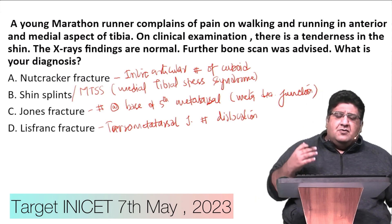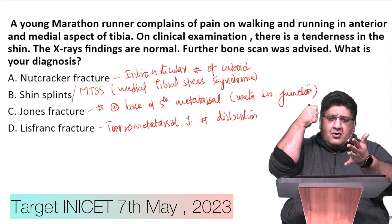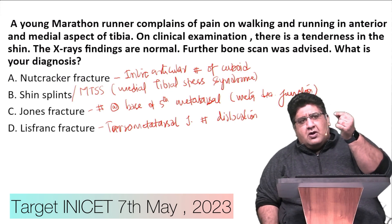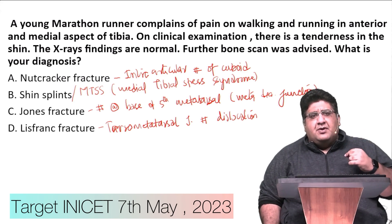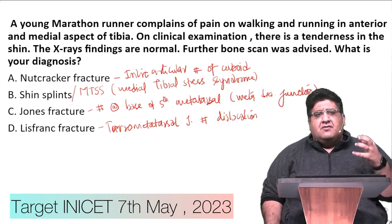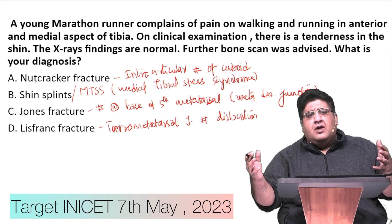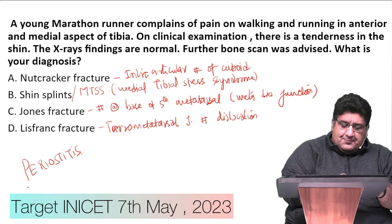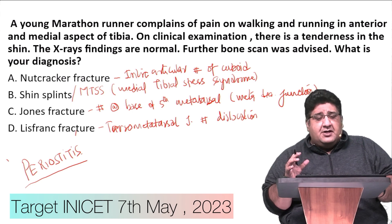Marathon runners have a constant cyclical loading, and because of that their shin - the anteromedial border of the tibia - is constantly under pressure. Because of that pressure, there are minute cortical breaks that keep on happening. Those cortical breaks lead to inflammation of the outer jacket of the bone - the periosteum. The key word here is periostitis.